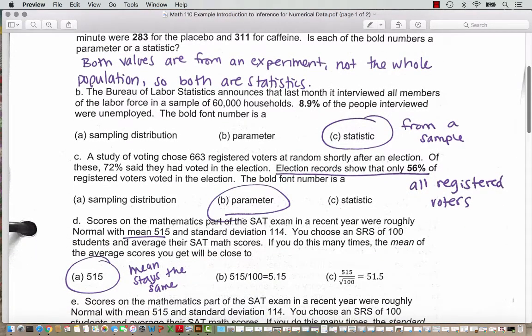Question B. The Bureau of Labor Statistics announces that last month it interviewed all members of the labor force in a sample of 60,000 households. 8.9% of the people interviewed were unemployed. The bold font number is a statistic because it comes from a sample. The sample is the 60,000 households. It's not everyone in the country.